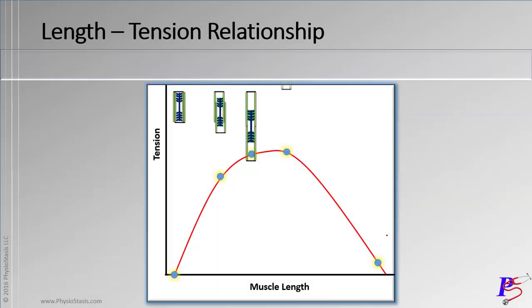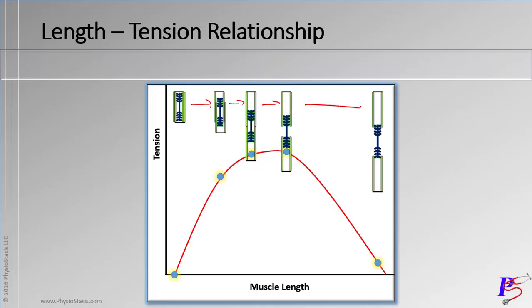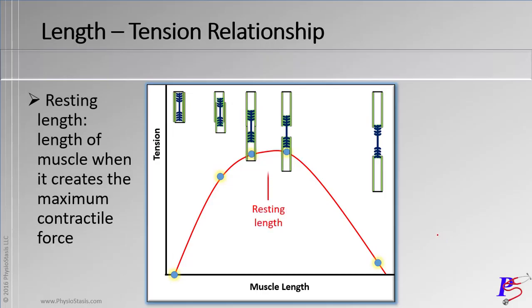To put this all together: as we get longer sarcomere length going to the right, each sarcomere is represented by a dot on the graph below it. Another term here is resting length — that's the length of the muscle when it generates its maximum contractile force, where you have the most overlap of myosin heads with actin. So resting length will be right in the middle area of the active tension curve.